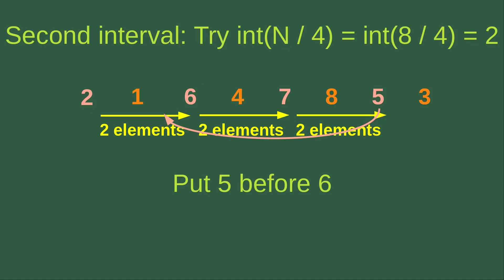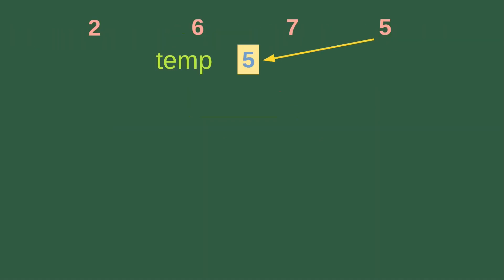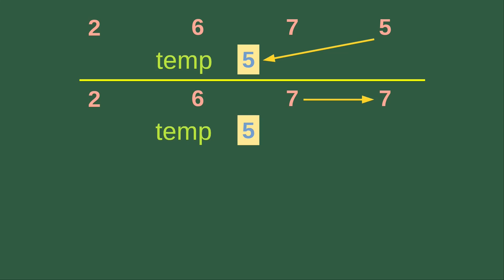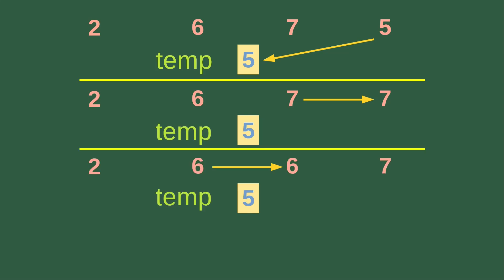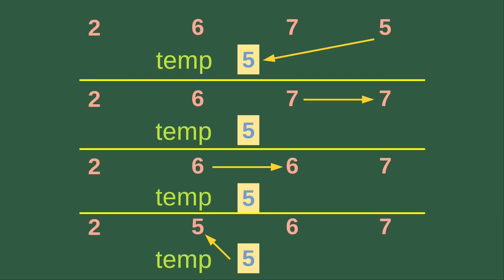What remains is element 5, which should be put before 6. The insertion sort considers three elements: 6, 7, and 5. We put 5 to the temporary variable first, then copy 7 to the next position, then copy 6 to the next position — moving 6 and 7 each one position respectively. After that, we put the temporary variable to the now-vacated position, so 5 becomes the first element out of 5, 6, and 7. The insertion sort process is complete.